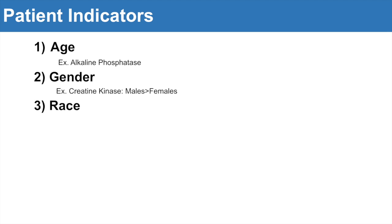The next one is race, and this is very important. Again, we see with creatine kinase that it is typically higher in people of African descent. So we always have to think about race when it comes to clinical values as well.